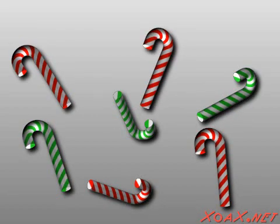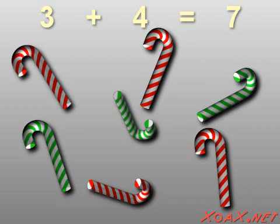the sum or total number of candy canes that we have is 1, 2, 3, 4, 5, 6, 7. So 3 plus 4 equals 7.